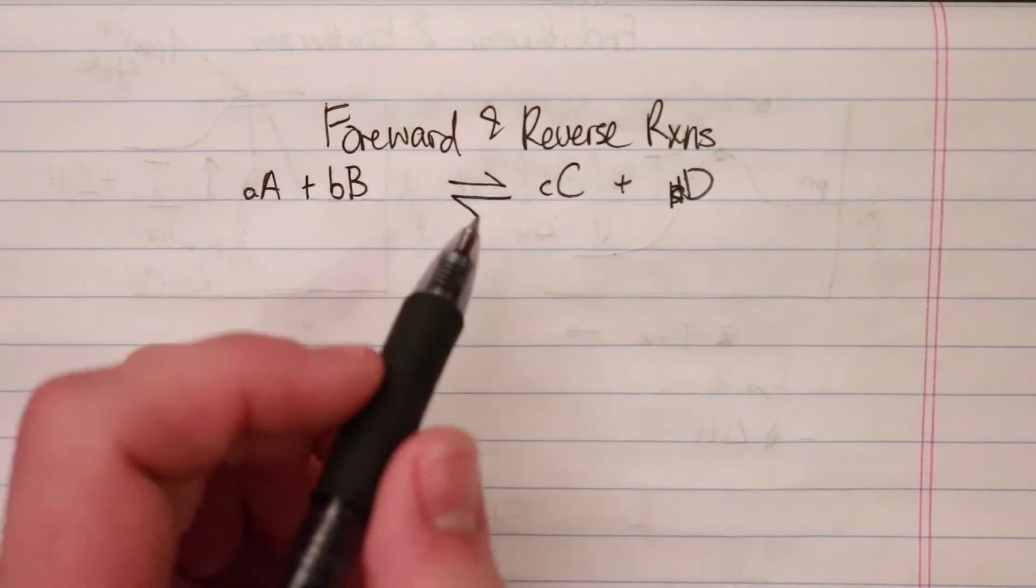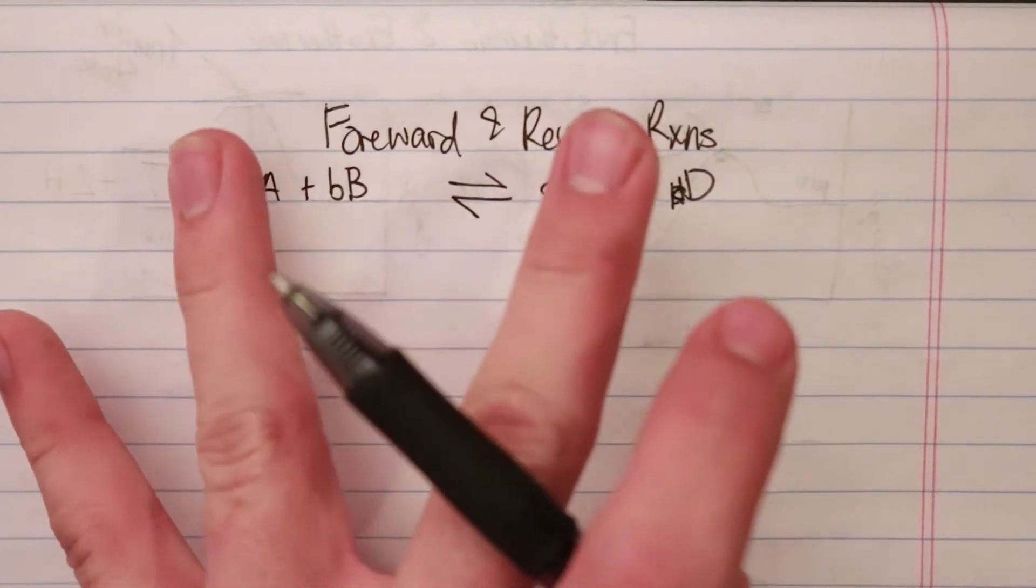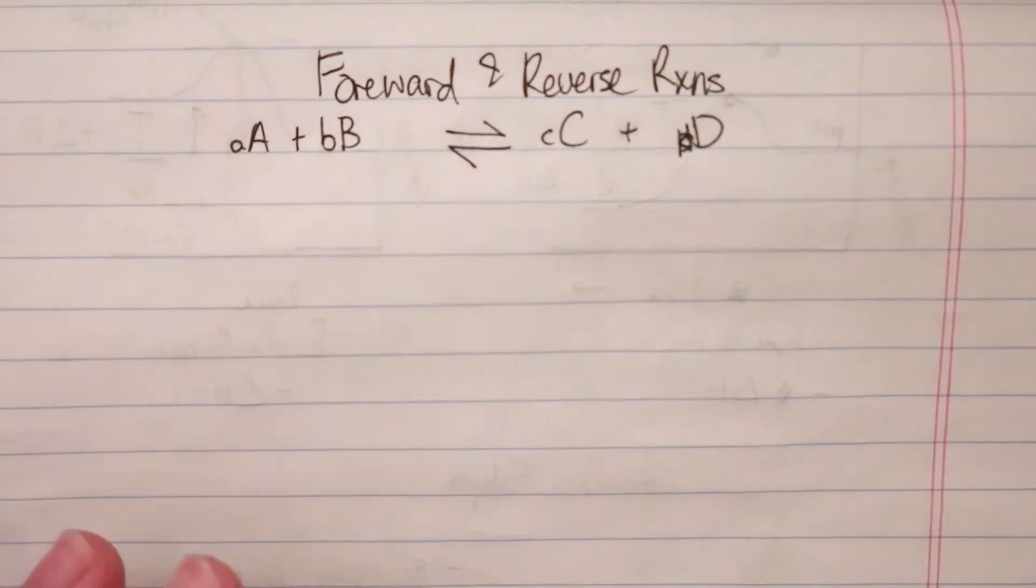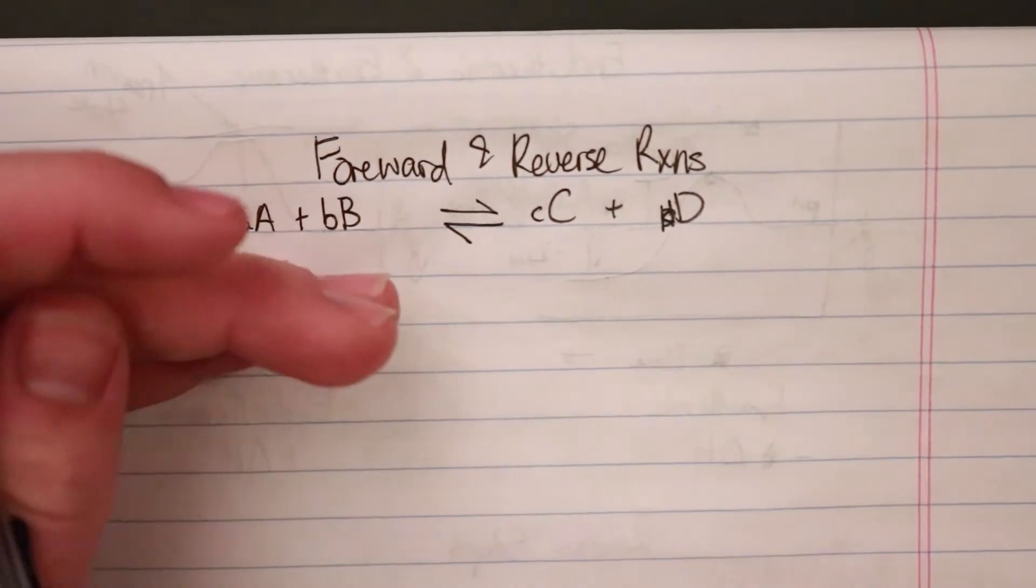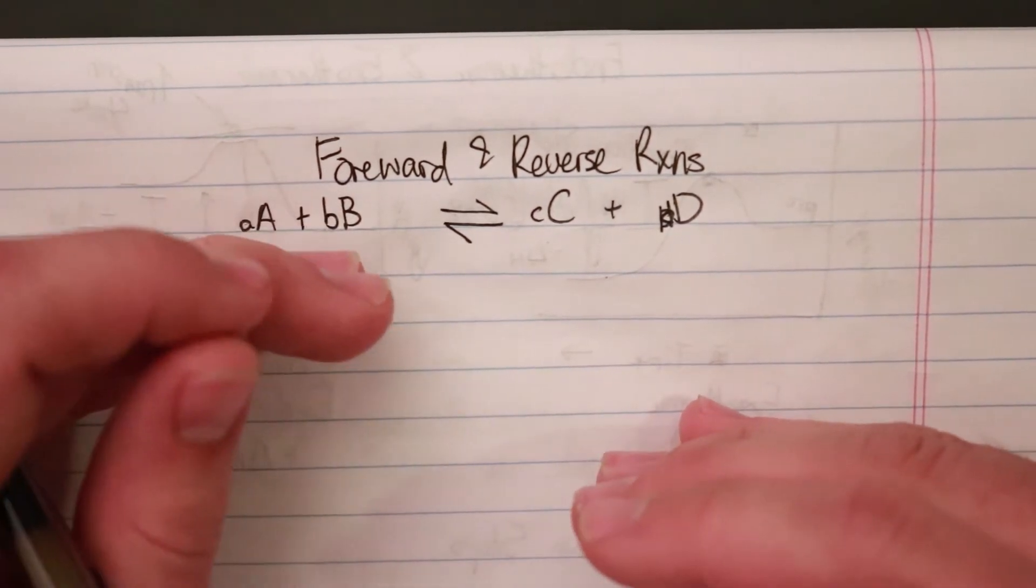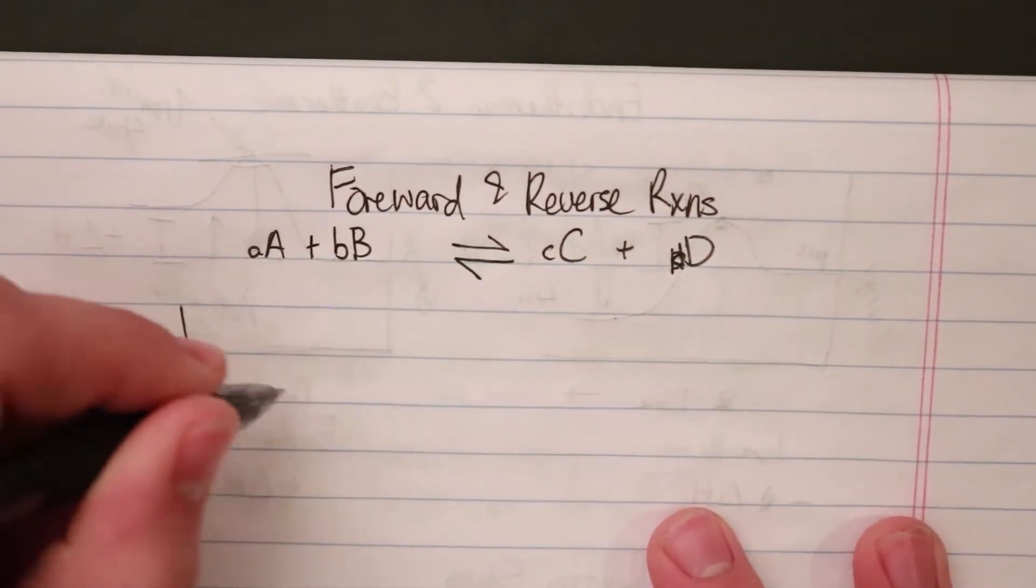When we talk about equilibrium, it's when the rate of each of these is going the same. The rates will equalize and they will have steady concentrations, and that'll look like this on a graph.